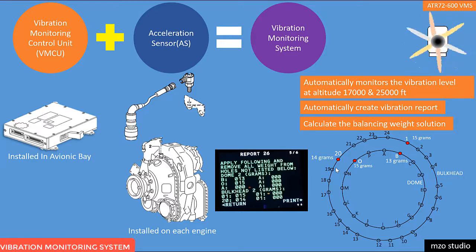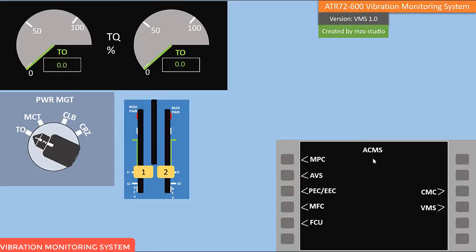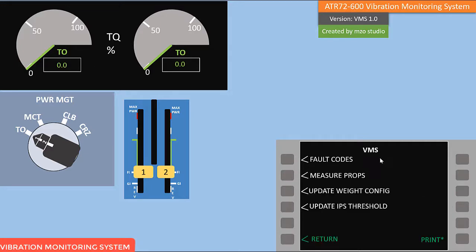I will show you how to use this VMS. In the ECMS menu, access the VMS page. In the VMS menu we have the following functions: code measure props, update weight config, and update IPS threshold. The fault function is applied to detect malfunction of the VMS system sensor, computers, or input data.